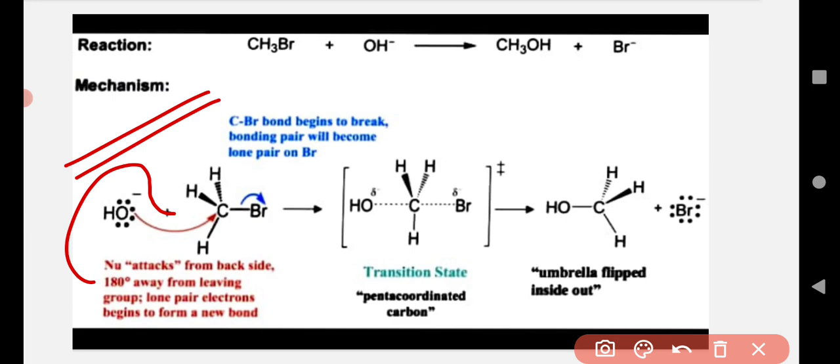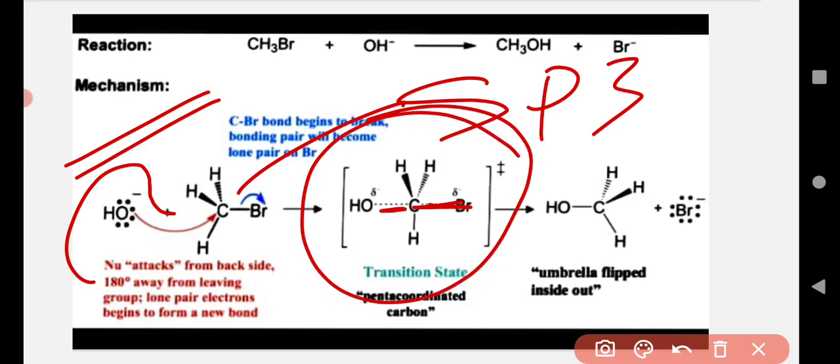We know that the hybridization of carbon is sp3 and the structure is tetrahedral. But as OH minus ion or nucleophile attacks on the carbon, the bond of carbon and Br becomes weaker and weaker, and the C-OH bond becomes stronger. This condition is known as transition state. Transition state exists only for a short time.